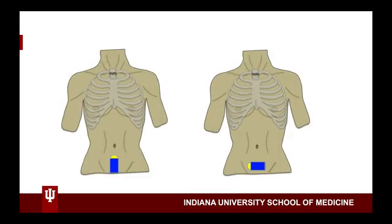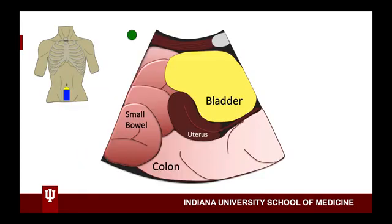To perform the exam, we will find and measure the bladder in the sagittal and transverse orientations. In the sagittal view, with the probe placed just above the pubic symphysis and the marker dot pointed towards the patient's head, you will drag the probe back and forth. Once you have identified the view where the bladder appears the longest, you will freeze the image. With the image frozen, you will be ready to measure the length of the bladder. This is done by selecting the measurement or caliper icon. When measuring, the caliper should be placed just inside the bladder wall.